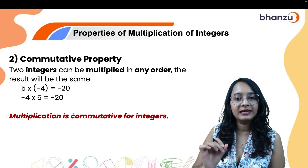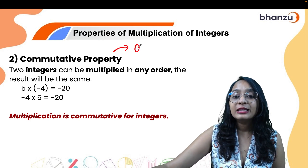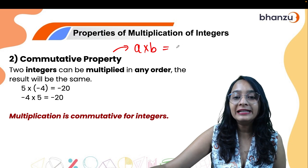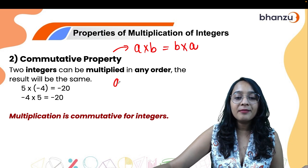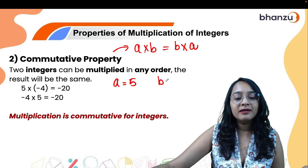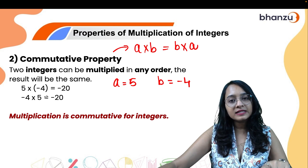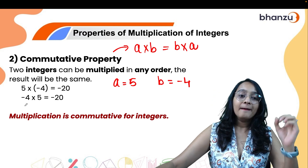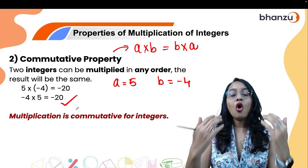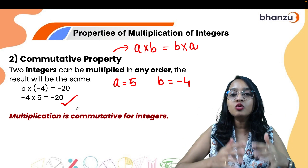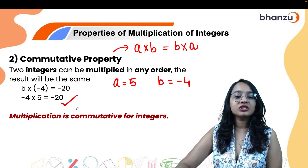Commutative property says the order in which you multiply numbers does not matter. Taking a = 5 and b = minus 4: 5 multiplied by minus 4 gives minus 20, and minus 4 multiplied by 5 also gives minus 20. So the order in which you multiply two or more integers does not matter — multiplication is commutative.